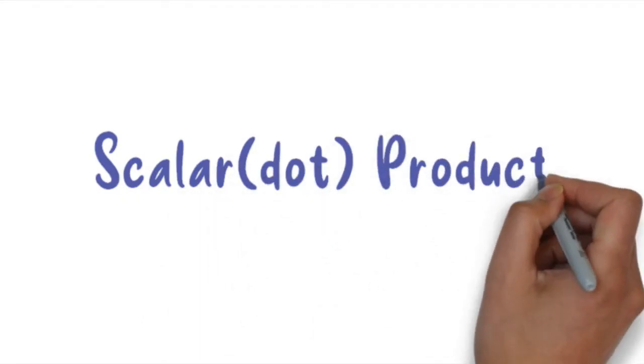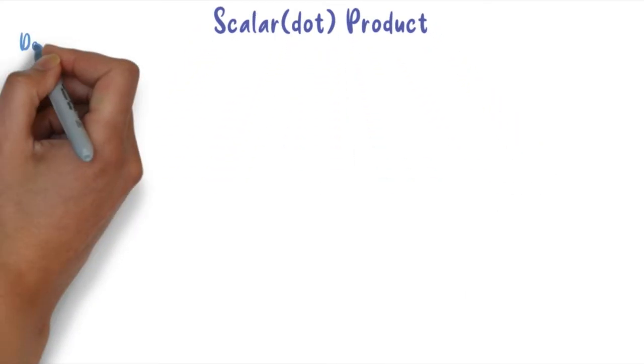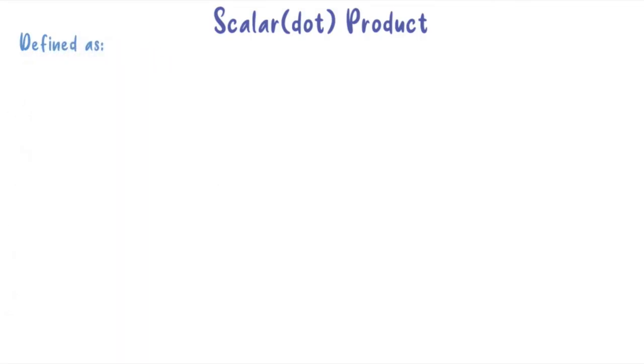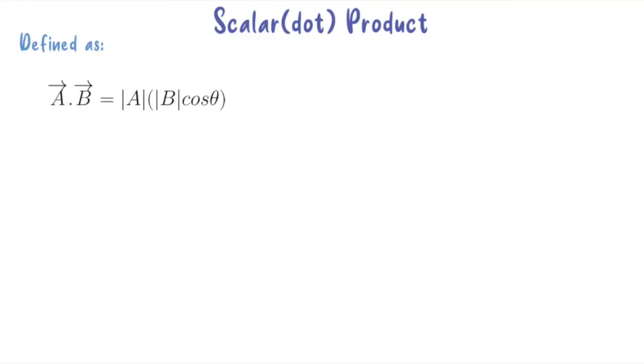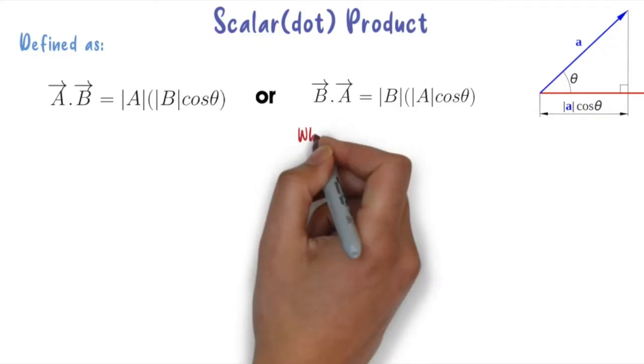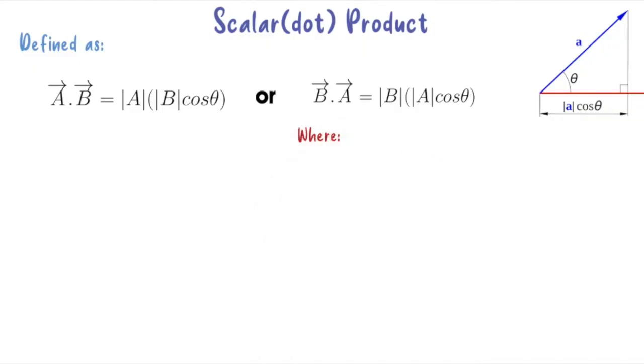Okay, let's move to scalar or dot product. What is scalar or dot product? Scalar or dot product can be defined as vector A dot vector B. How to calculate the magnitude is shown in the video: A dot B equals modulus A times modulus B cosine theta.